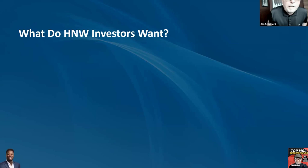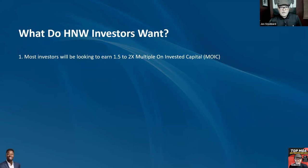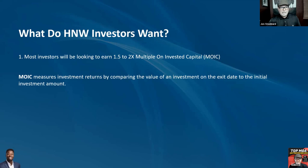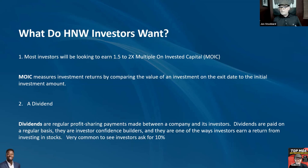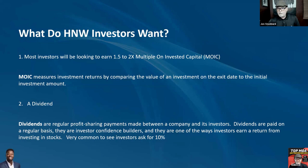What does a high-net-worth individual investor want? Number one, most investors look for a 1.5 to 2x multiple on invested capital — that measures investment returns by comparing the value of the investment on the exit date. So if they put in $180,000 today, in five to seven years they expect $360,000. They also want a dividend — regular profit sharing paid between the company and its investors. If someone gives you $180,000 and you pay a 10% coupon, that gives them confidence their investment is being taken care of. It's very common to see investors ask for 8% to 15%.